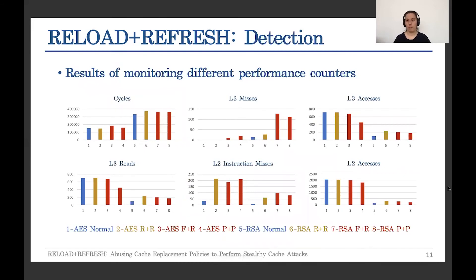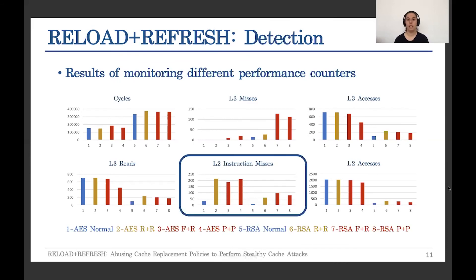We have collected information about our attack and all these attacks from different performance counters. As you can see in the graph, there are results for AES and RSA in different situations, and there is only one performance counter that is able to distinguish between attack and normal situations in all cases. That counter is the level two instruction misses counter. But this is a tricky counter because we don't really know what the effect would be of any other benign application sharing the same core as the victim application.